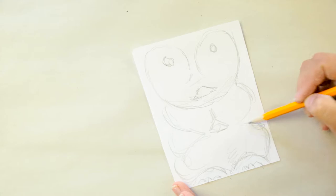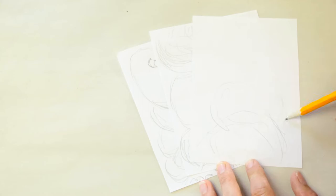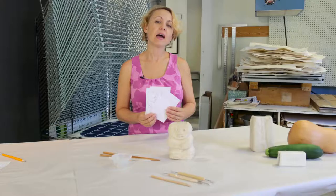A sculpture is three-dimensional. We can see it from all sides. So we will sketch the front, sides, and back to get an idea of what we are going to carve.